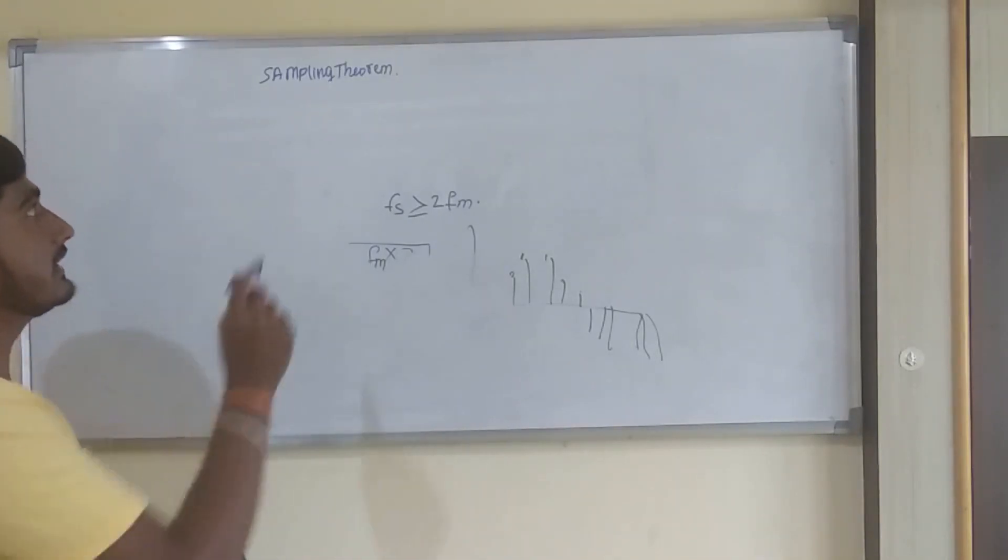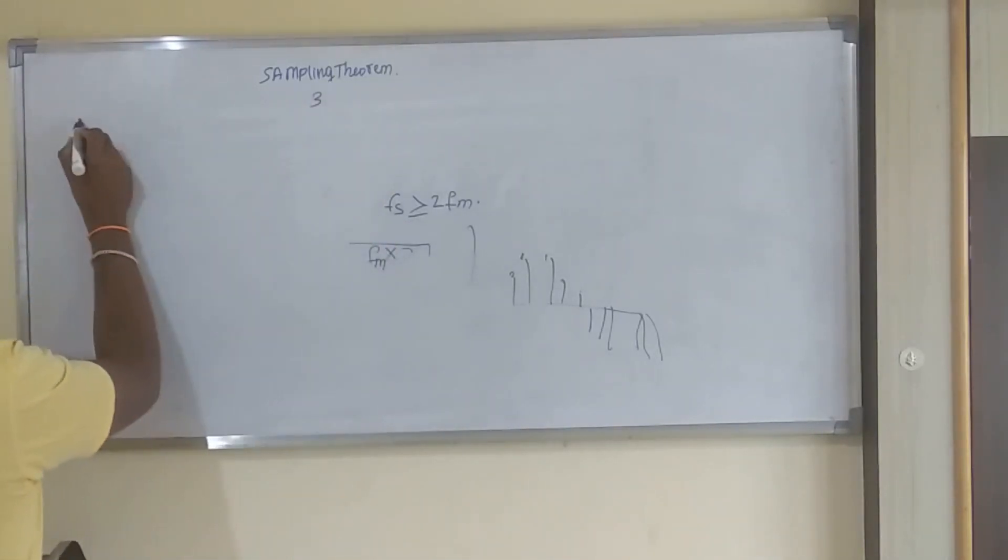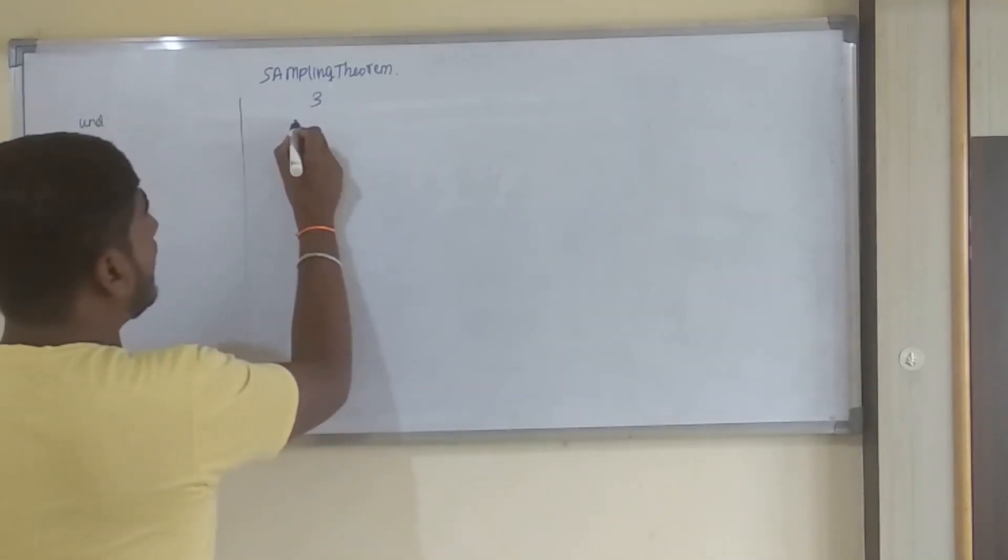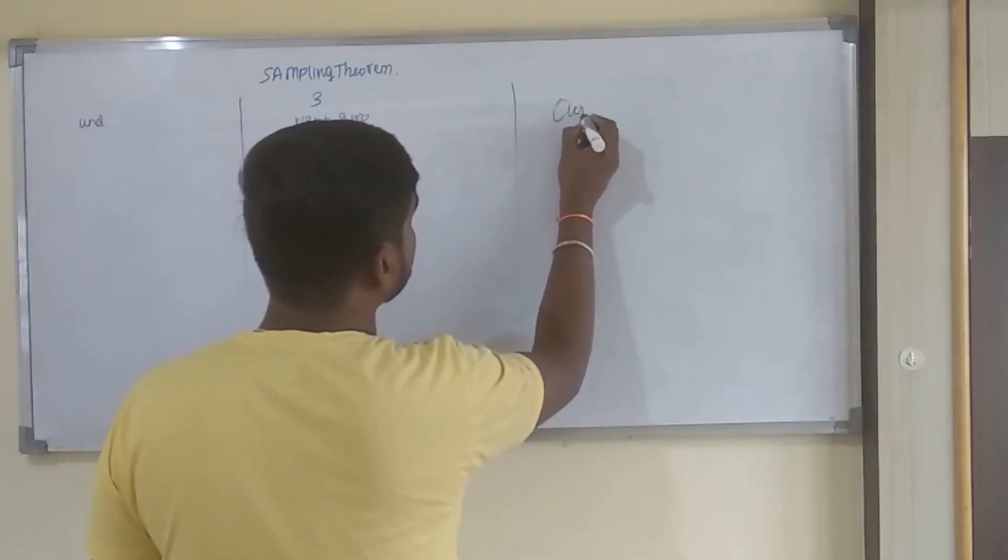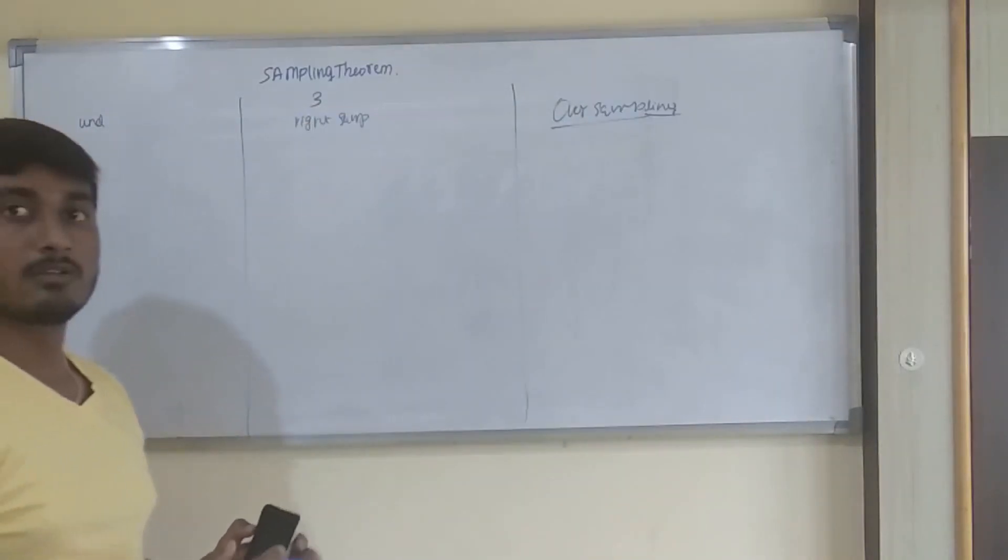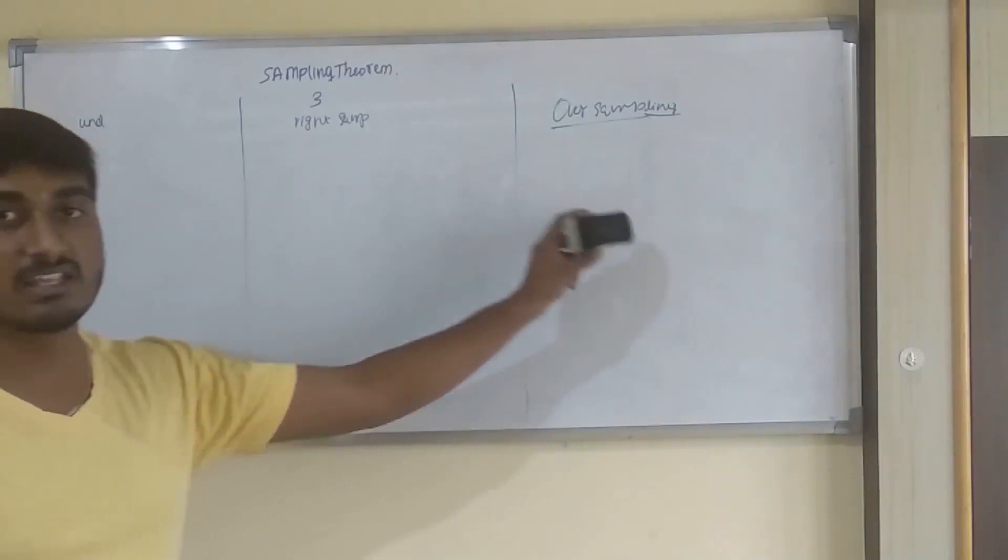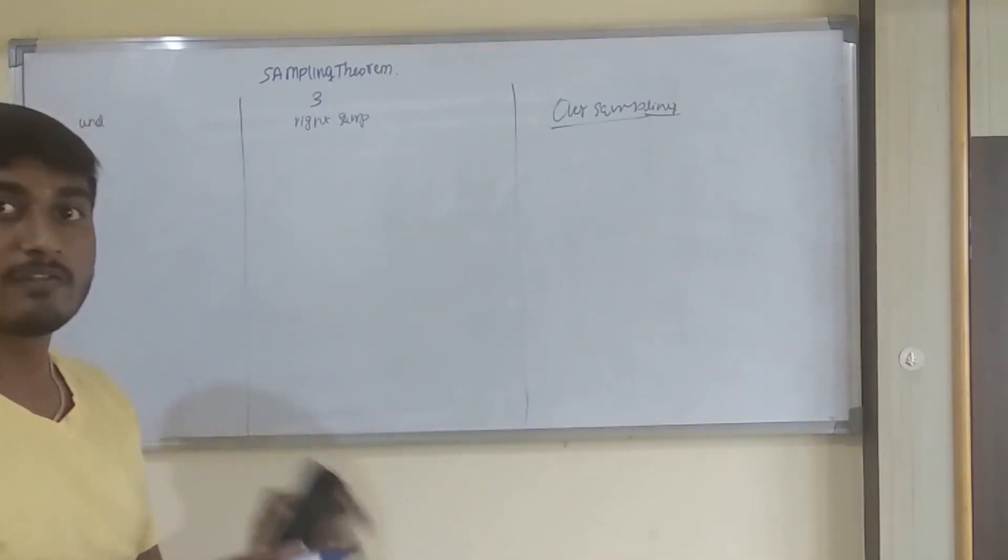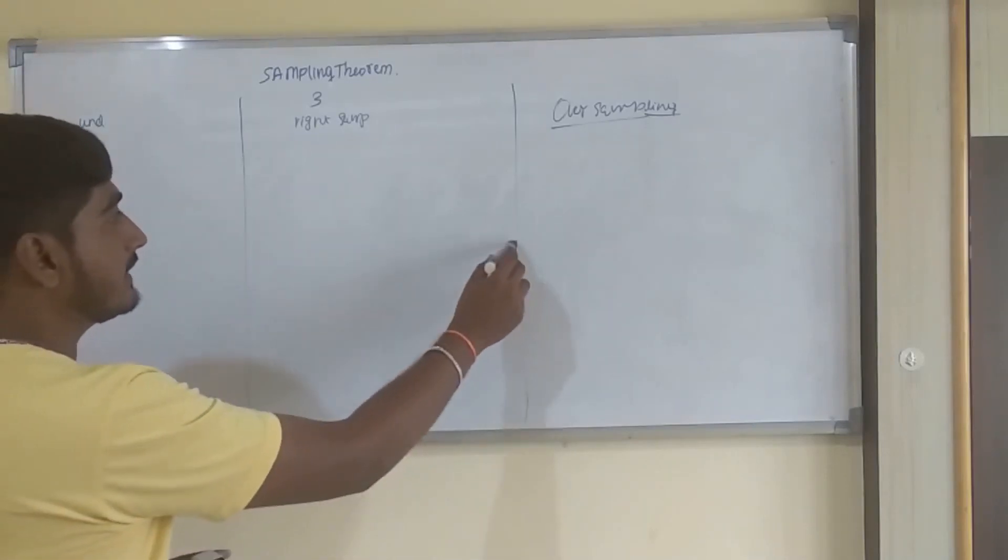The entire program is divided into three parts: first one is undersampling, the right sampling case, and oversampling. For this, by using MATLAB, we will be writing code considering these three cases. Before that, what are the things we need?